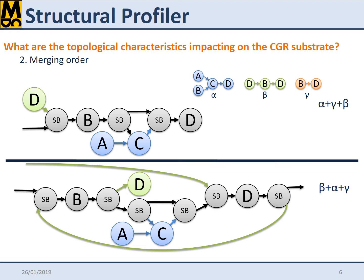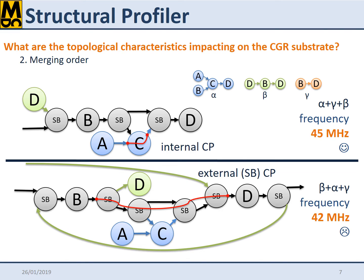The merging order affects the achievable performance too. Please note that you merge two networks at a time and that the switching elements are purely combinatorial ones. The feeding sequence, while you are composing the networks, may affect the maximum achievable operating frequency, leading in some cases to a longer critical path.